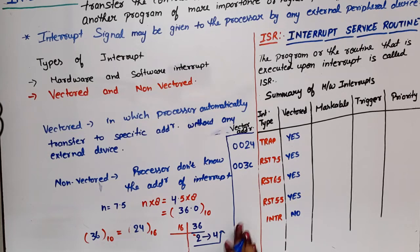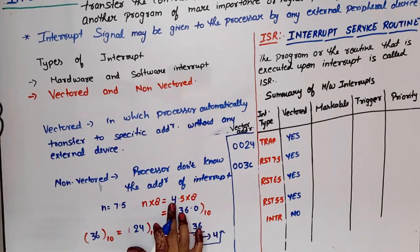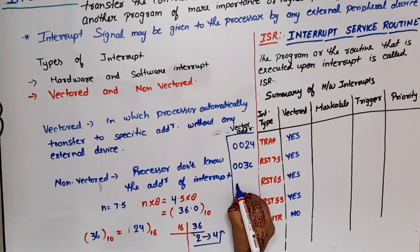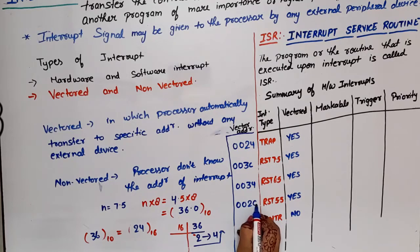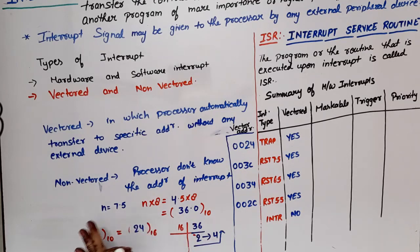For RST 6.5, you calculate the same way. The full address table is: TRAP = 0024, RST 7.5 = 003C, RST 6.5 = 0034, RST 5.5 = 002C. You can either memorize these or calculate using the formula n × 8. For INTR, we cannot calculate an address because it is non-vectored.